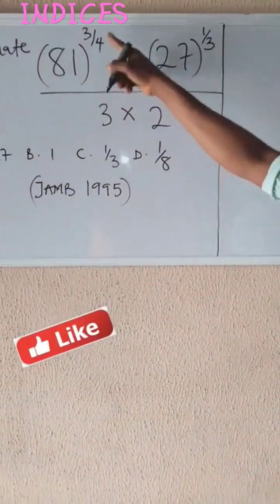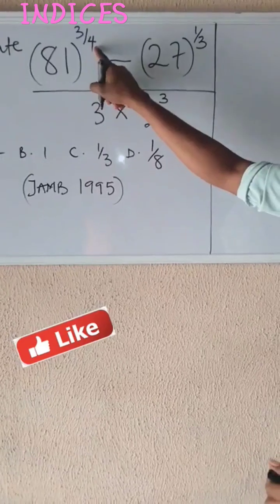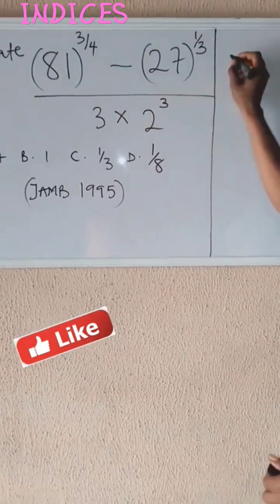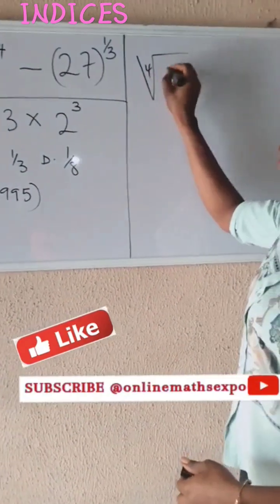What you have here is 81 raised to the power of 3 over 4. We are going to use the denominator to form root. So we are going to have 4th root of 81, then 3 will be the power.